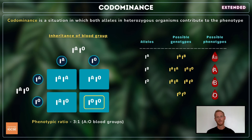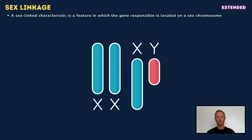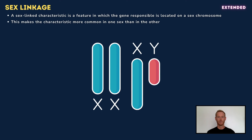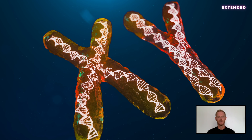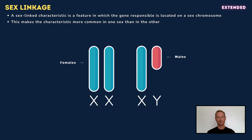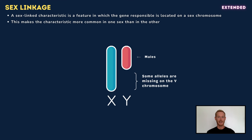We'll move on now to sex linkage — I recommend you pause the video for a moment to study the Punnett square. A sex-linked characteristic is a feature in which the gene responsible is located on a sex chromosome, which makes it more common in one sex than the other. In addition to carrying genes related to sexual development, the sex chromosomes also carry genes that code for other characteristics. Females possess two X chromosomes, while males have one X and one Y. Y chromosomes are shorter than X chromosomes, so some alleles present on the X chromosome are absent on the Y. This means that in males, even if the allele is recessive, it's certain to be expressed due to the lack of a corresponding allele on the Y chromosome.